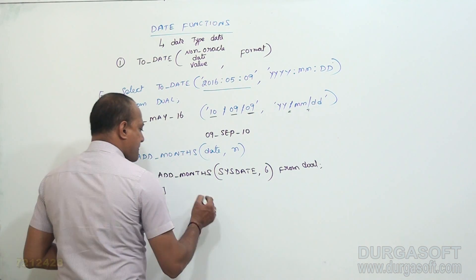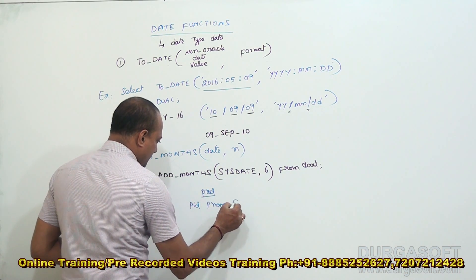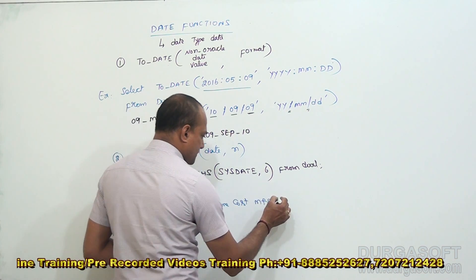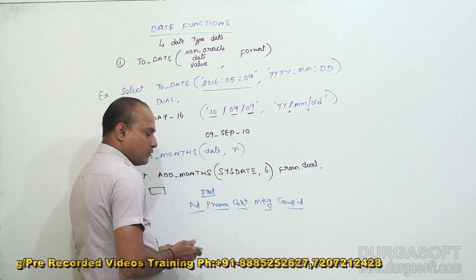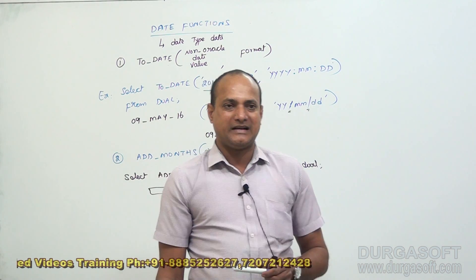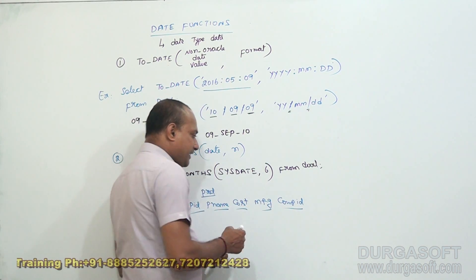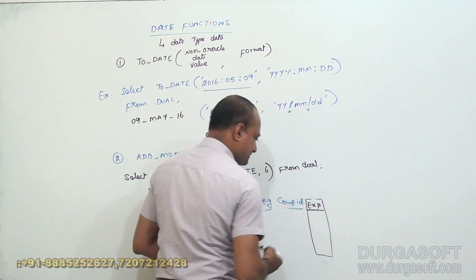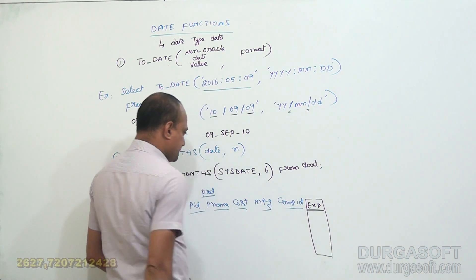Assume I have a product table with columns: product ID, product name, cost, manufacturing date, and company ID. My target is to maintain an expiry date for each product. To do that, I need an additional column — I'll add it using the ALTER TABLE command, and it gets added at the end of the table.